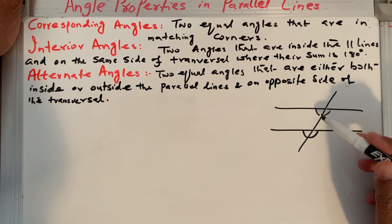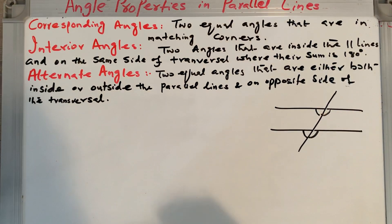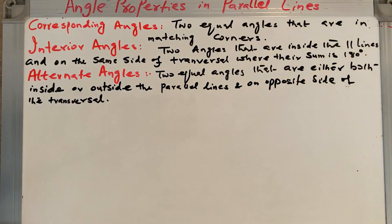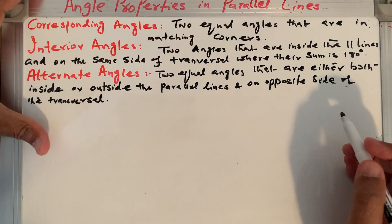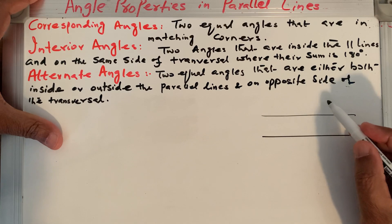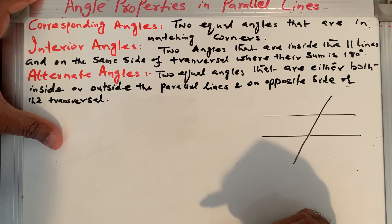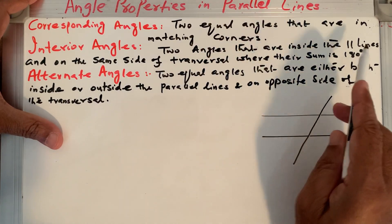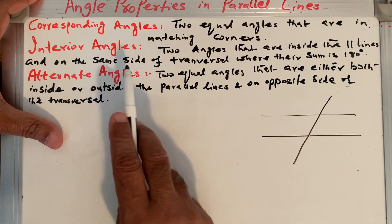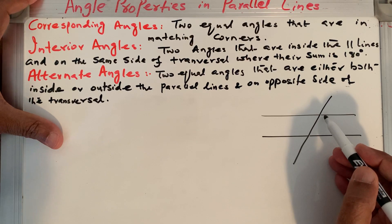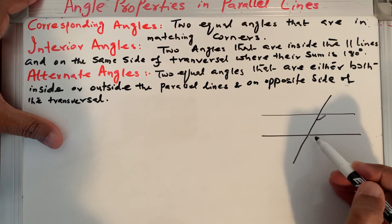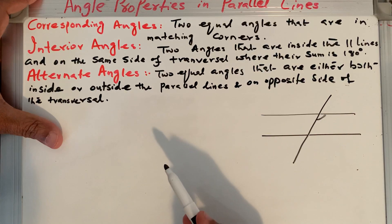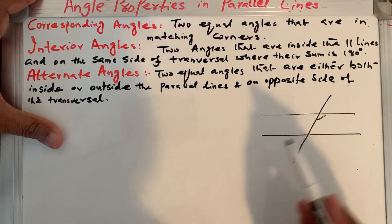Another form of angle we are looking at now are interior angles — two angles that are inside the parallel lines. With the same two parallel lines and a transversal line, we see interior angles that are inside the parallel lines and on the same side of the transversal, where their sum is 180 degrees.